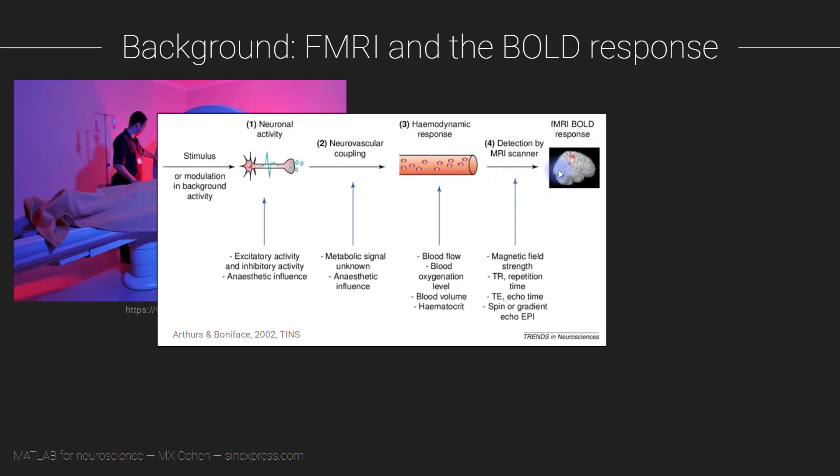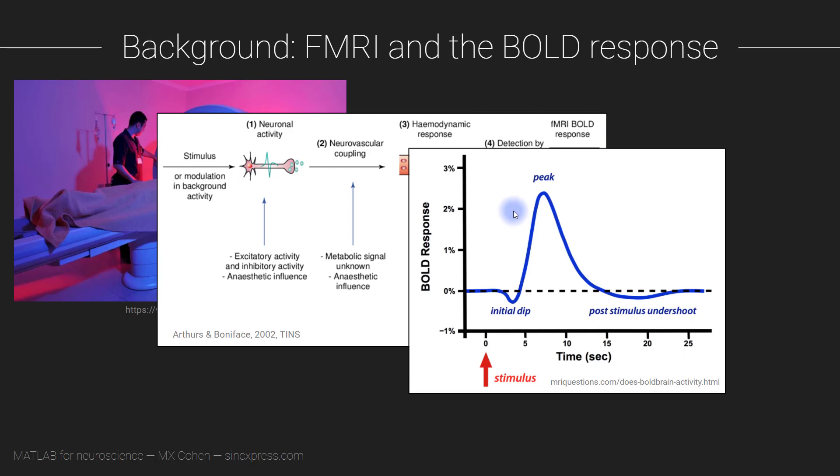The basic idea of the hemodynamic response is that after some large change in neural activity, for example arising from a visual stimulus, there's an increase in the hemodynamic response and then a return to baseline. Now notice the timescale here is over many seconds compared to the timescale of neural activity which is in the order of tens to hundreds of milliseconds.